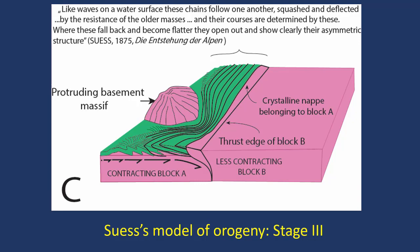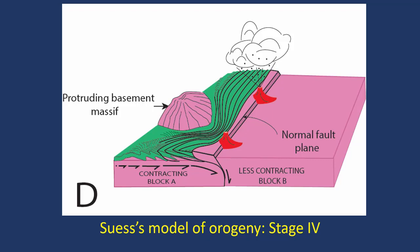The folds of these orogenic belts, if there are any big basement massifs, go around them — exactly what we see in Europe, exactly what we see in the Appalachians, and exactly what we see in Asia. Finally, the other side also subsides, like the Tyrrhenian Sea, and creates volcanism.